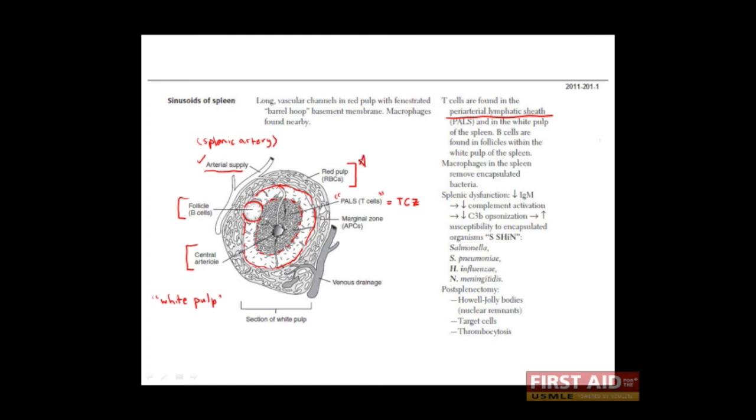In the red pulp and the closely associated marginal zone, you'll find a lot of antigen-presenting cells, like dendritic cells, but also macrophages.